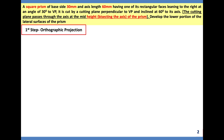First step: orthographic projection. Draw the XY line. Since we are following the first angle of projection system, the vertical plane comes above XY — front view will be there — and below XY the horizontal plane — top view will be there. As per the condition given in the problem, we will draw the top view because it is resting on HP.